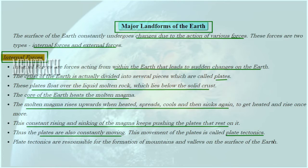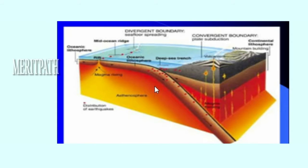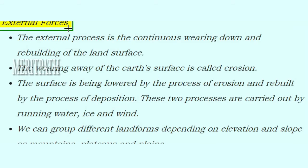Plate tectonics - the movement of the plates - results in the formation of mountains and valleys on the surface of the earth. In this image, students, you can see the internal forces of the earth: the land surface, the crust divided into plates, the innermost core, and between them the molten rock in a fluid-like consistency.